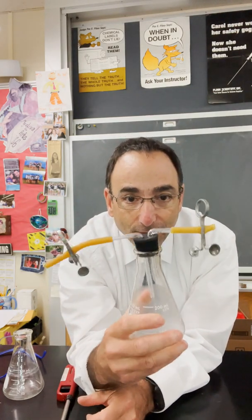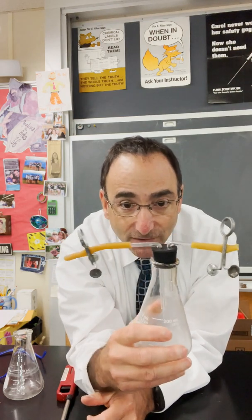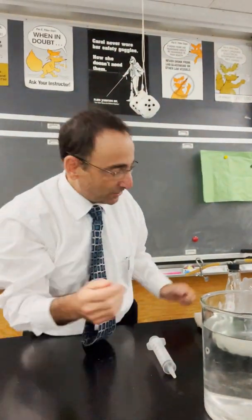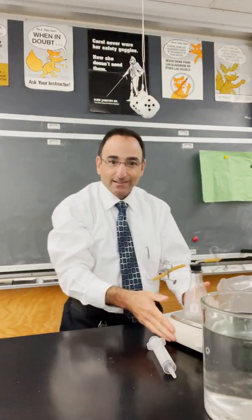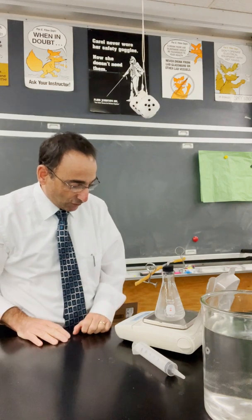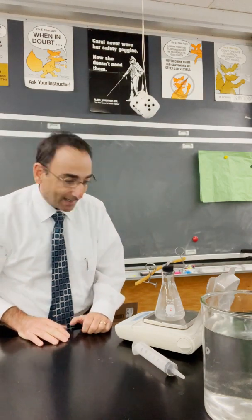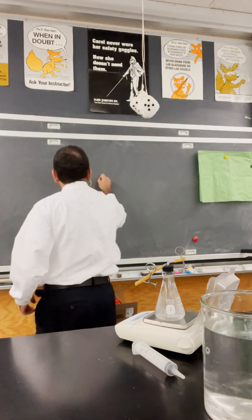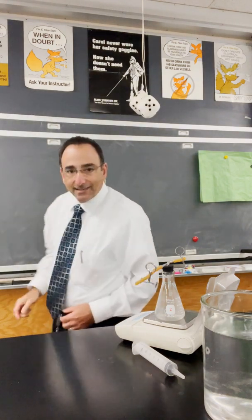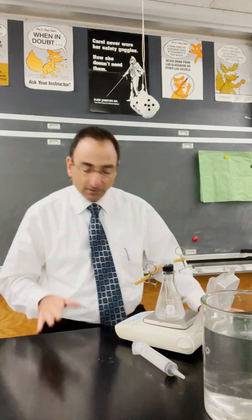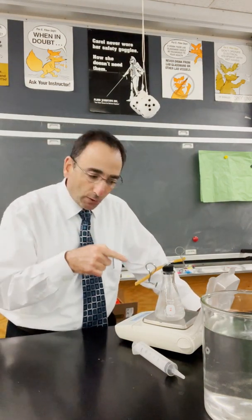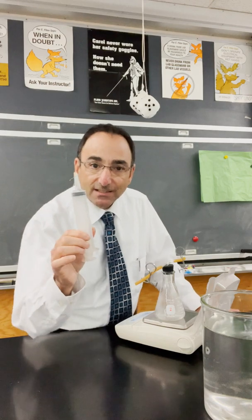We find the mass of this system as it is, so we put it on the digital balance. In this case the digital balance reads 200.99 grams. Now we're going to pull with a 60 ml syringe — we're going to pull the air out of the flask.